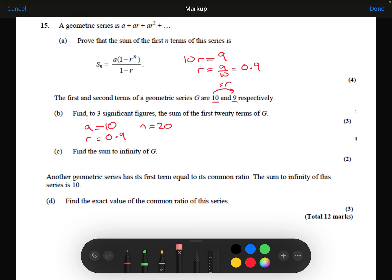So substituting all of those into our formula that we've just proved in part A, we can say that the sum is going to be equal to 10 times (1 minus 0.9 to the power of 20) divided by (1 minus 0.9). And that's going to give us 87.8. So that's the sum of the first 20 terms.